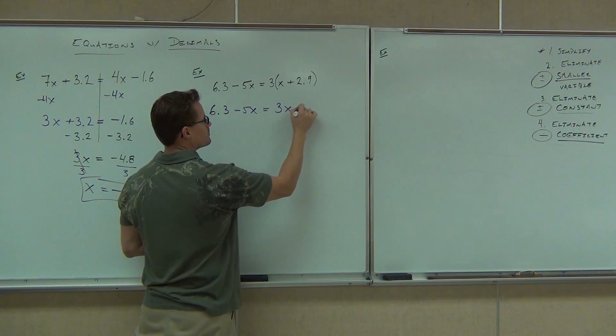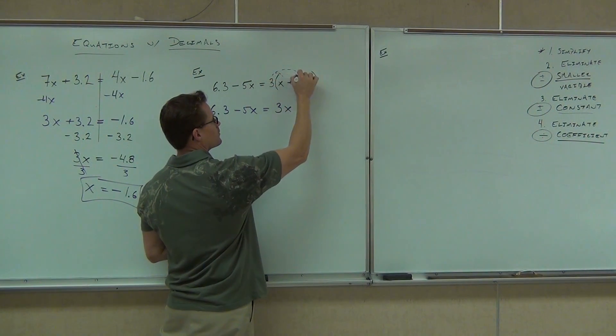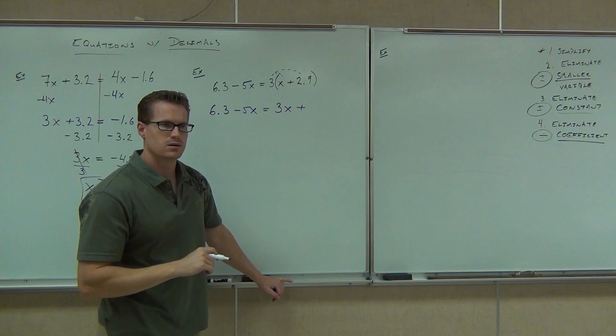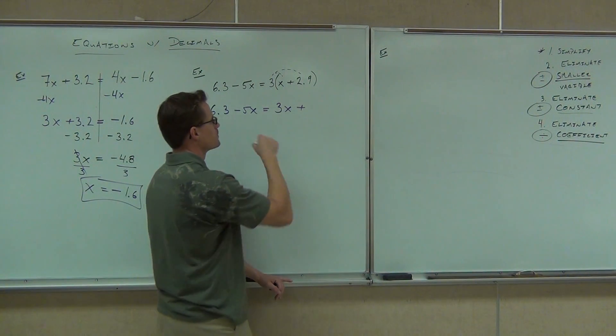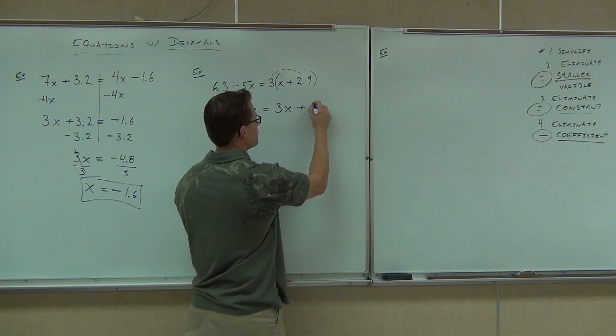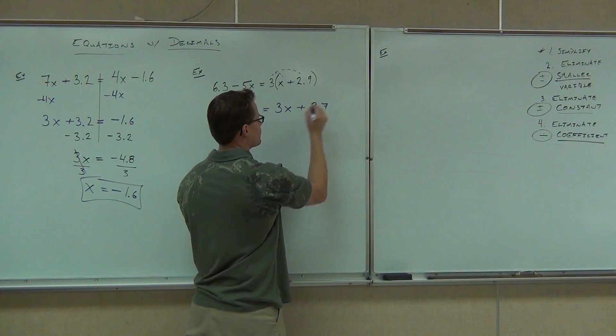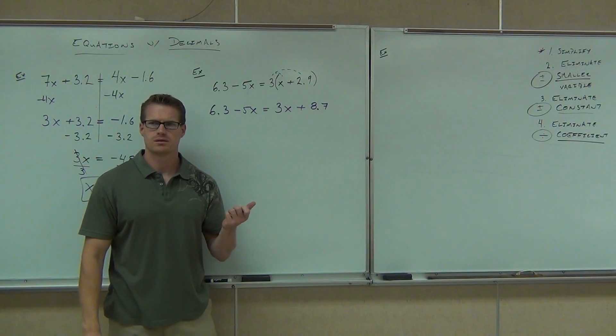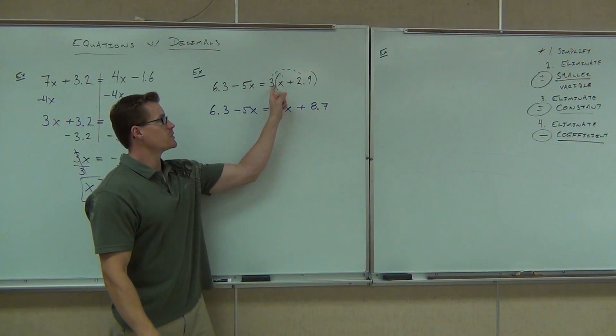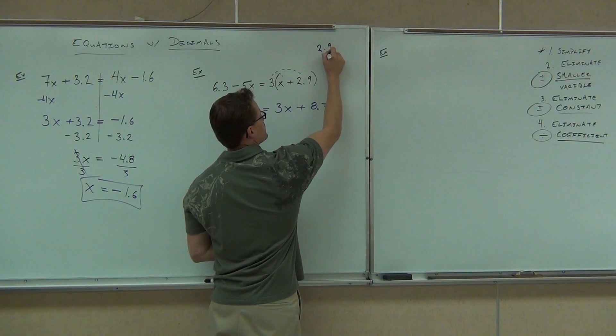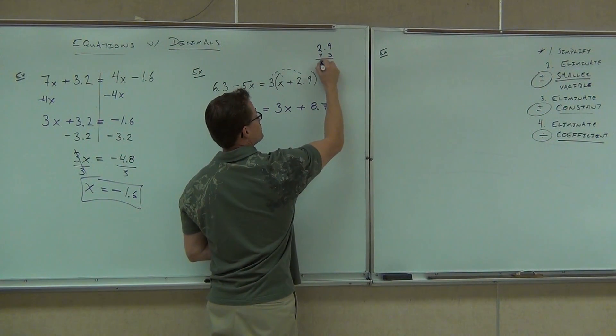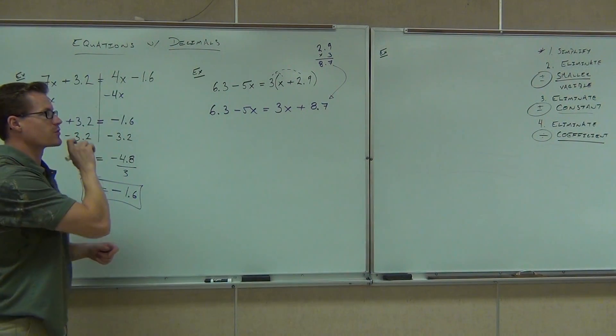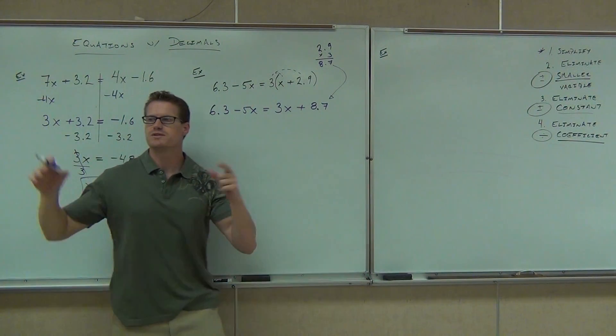So 2.9 times 3 should be 8.7. How are we getting 8.7? Yeah. You multiply. Three times. Okay. So I'm doing this. Maybe up to the side you want to do that. 2.9 times 3. That's going to be 8.7. That's going right there. That's where the 8.7 is coming from. Now this looks like a problem we've done before.